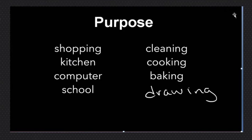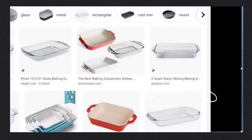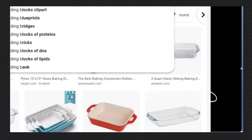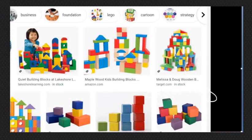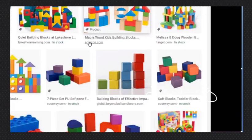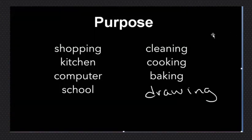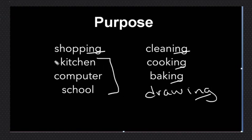So these are purposes. Maybe we can say 'building' — building blocks. These are building blocks; we make something with them. These words for purpose sometimes have -ing, because that's what we do with them, and sometimes they don't. It's just like — what is it for?